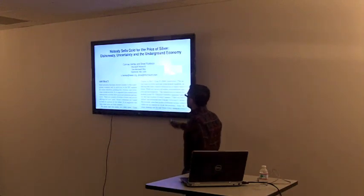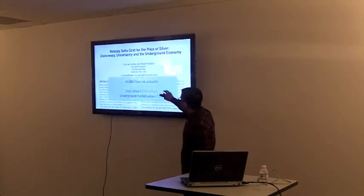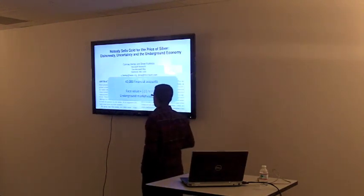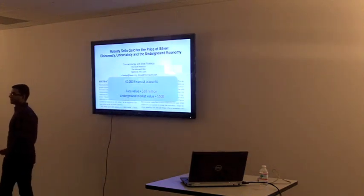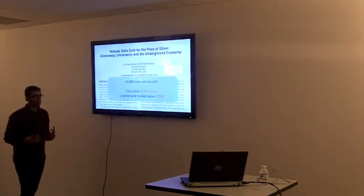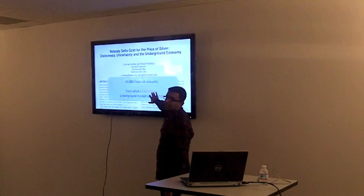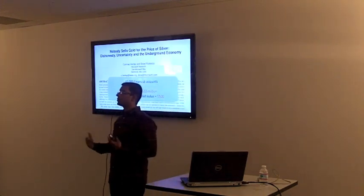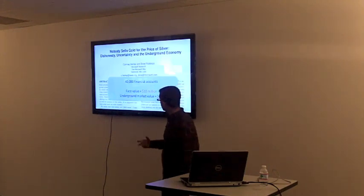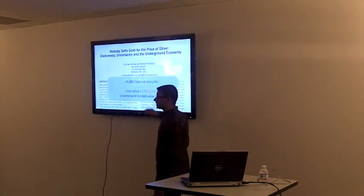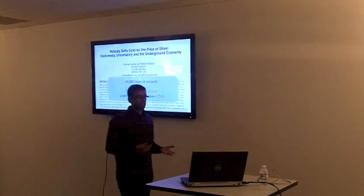They looked at one case study where 40,000 financial accounts with a face value of $10 million are being sold on the underground market for an actual market value of only $500. This is very typical — they go through example after example of the huge disparity between these two figures. What one can conclude is that the value of breaching access control is not the face value of $10 million; your ability to monetize stolen credentials is far less than what those credentials are worth in face value. But crucially, this is not the case with Bitcoin: if your server containing private keys worth $10 million in Bitcoins is breached, that is worth exactly $10 million to the attacker, because they can instantly steal all those funds with minimal risk.